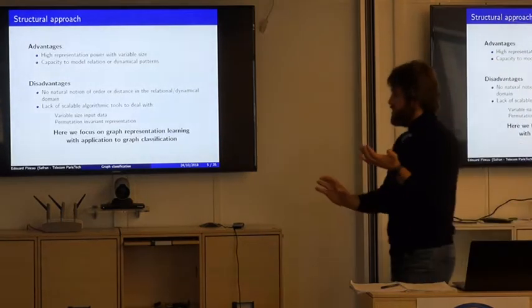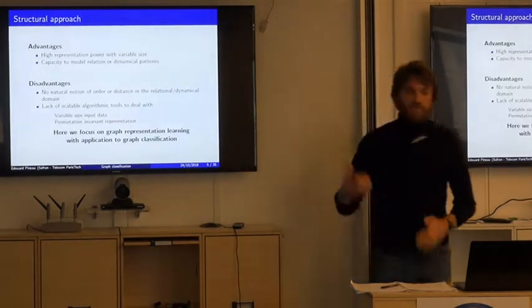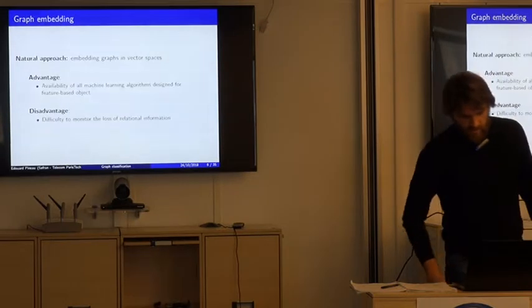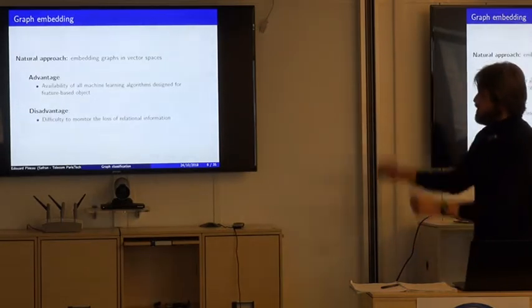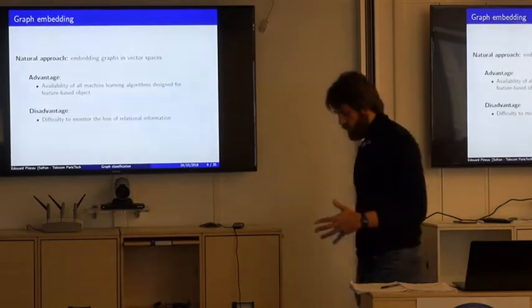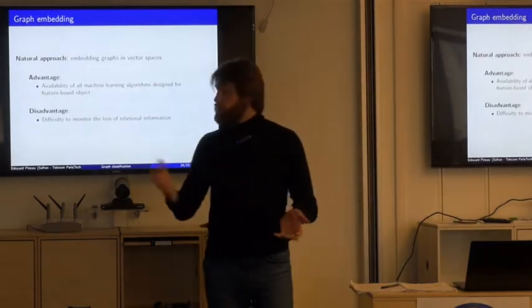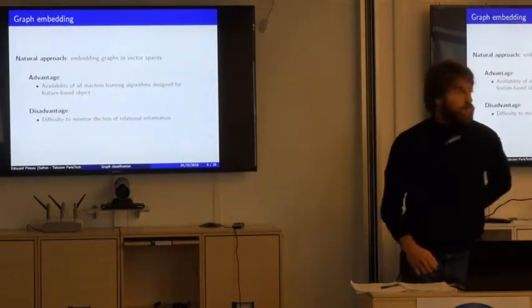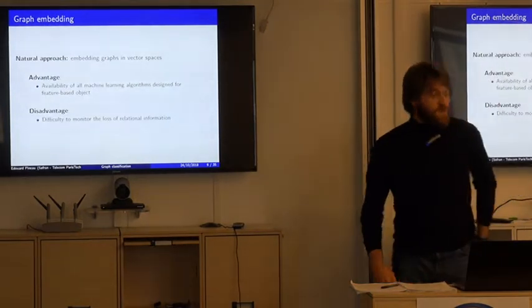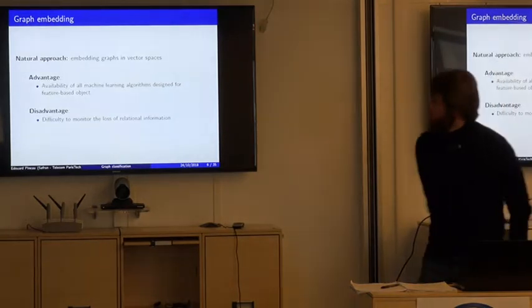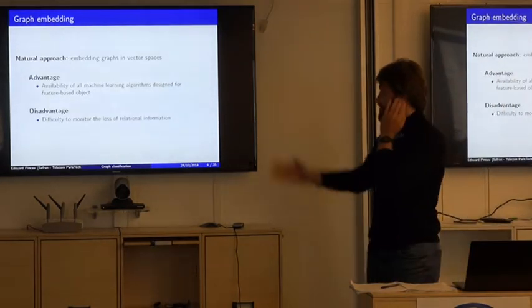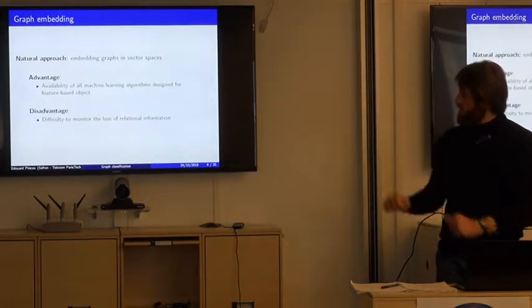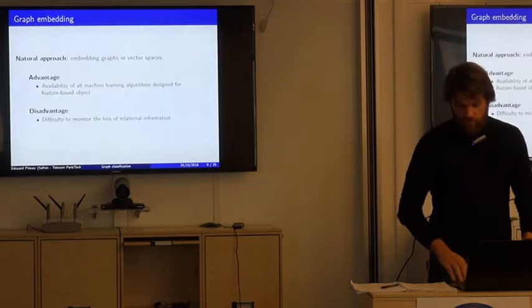Here we will focus on graph representation learning with application to graph classification. The first natural approach is graph embedding, because we want to be able to use the different algorithms made for the statistical approach. The advantage is the availability of different tools made for fixed-size vectors, but the disadvantage is the difficulty of monitoring the loss of relational information.